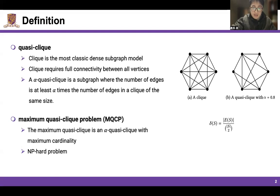A quasi-clique represents a relaxation of the clique to allow for real-world noise and missing edges. An alpha quasi-clique is a subgraph where the number of edges is at least alpha times the number of edges in a clique of the same size.